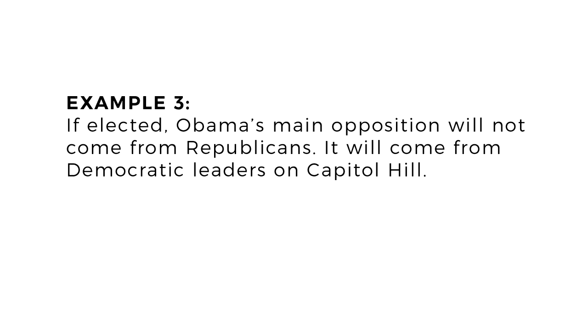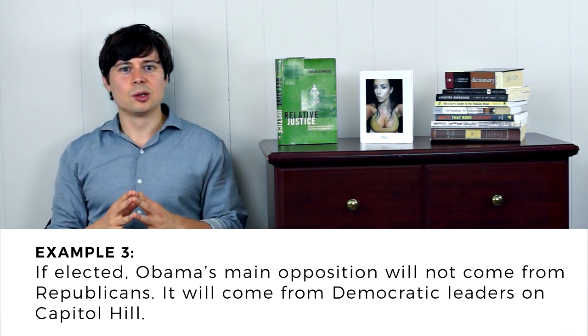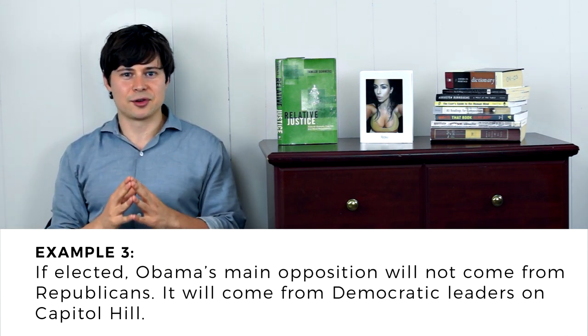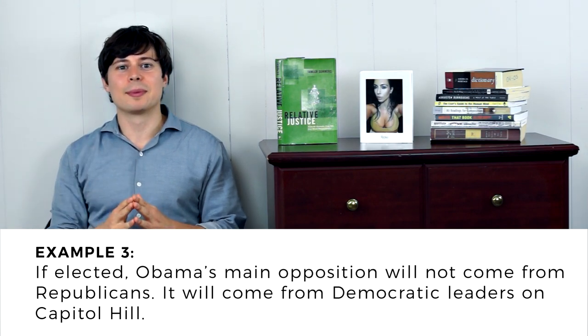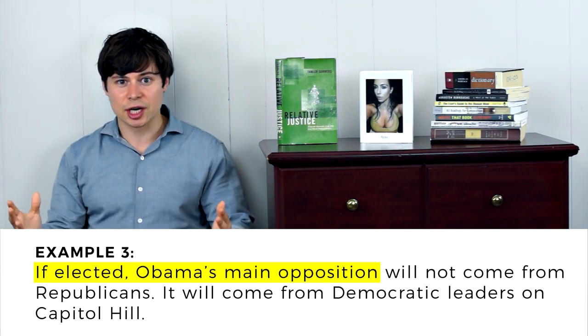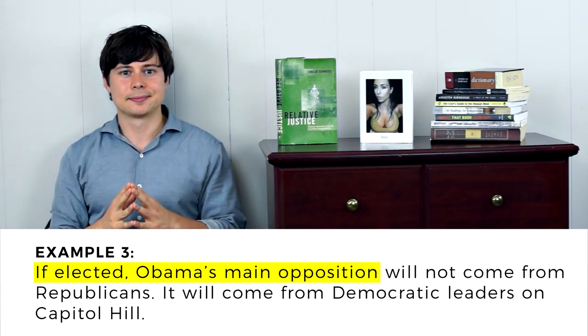You're thinking: you found a mistake your student made and that your brother made, but you wouldn't find a dangling modifier in the New York Times. Well, our final example comes from New York Times columnist and political commentator David Brooks in a 2008 article. Brooks writes: 'If elected, Obama's main opposition will not come from Republicans — it will come from Democratic leaders on Capitol Hill.' Now, this example looks harmless because Obama's name comes right after the comma, but it's still a dangling modifier because it implies that Obama's opposition, and not Obama, is being elected.